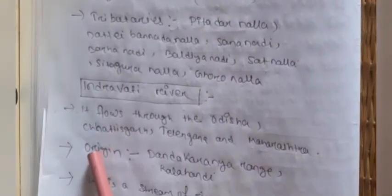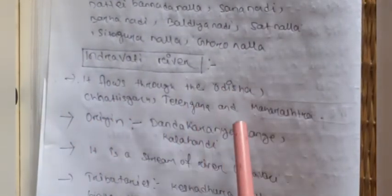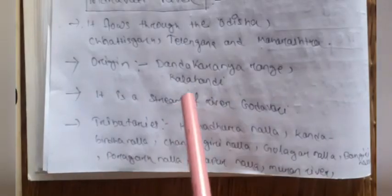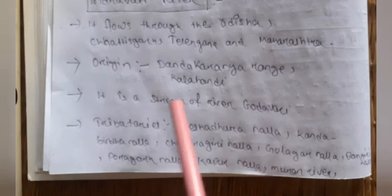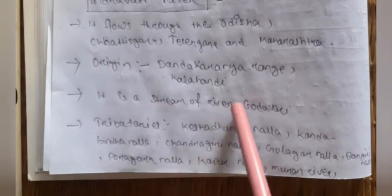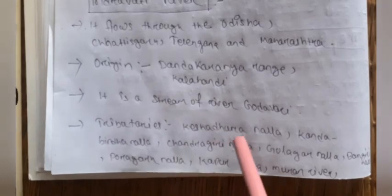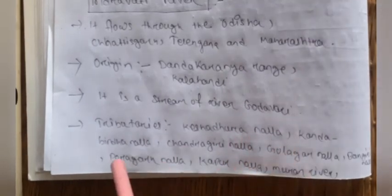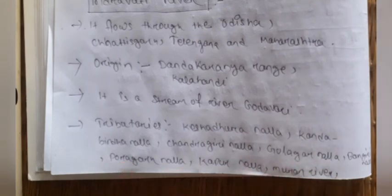Indravati river flows through Odisha, Chhattisgarh, Telangana, and Maharashtra. It is a tributary of the Godavari river. Its own tributaries include Kesa Dhura Nala, Kandobindha Nala, Chandragiri Nala, Golagora Nala, Bangiri Nala, Poragadha Nala, Kapooru Nala, and Muran Nala.